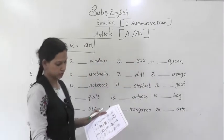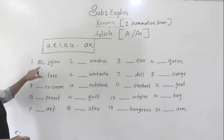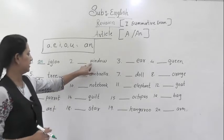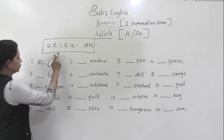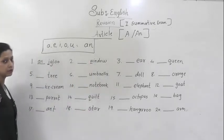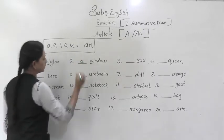Now, let's solve this worksheet. So, the first, already it is solved here. You have to see the letter. The first is vowel. So, here I use an. So, second is W. W is not a vowel. It is a consonant. So, here I used a window.